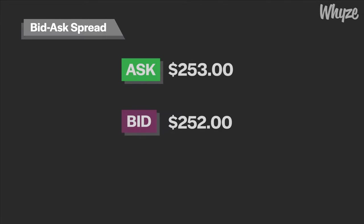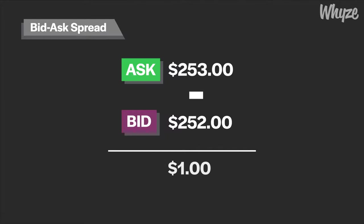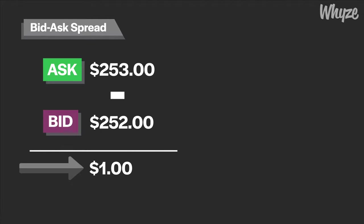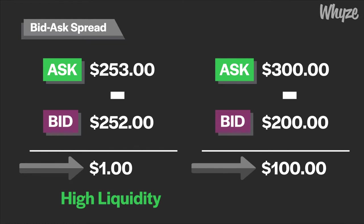When looking at the bid and ask of a stock, it is also important to pay attention to the spread between the two. The bid-ask spread is simply the difference between the bid and ask price of a stock at any moment. A small bid-ask spread means the stock is highly liquid and can easily be traded because the prices wanted for buying and selling the stock are close to each other. A large bid-ask spread means the prices are farther apart, meaning the stock is not as liquid, so an agreement between a buyer and seller will be less likely.